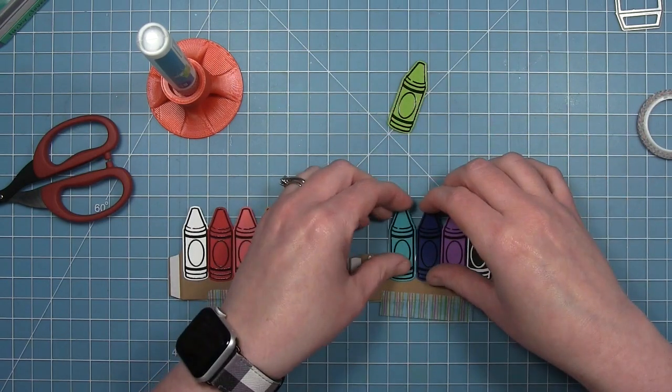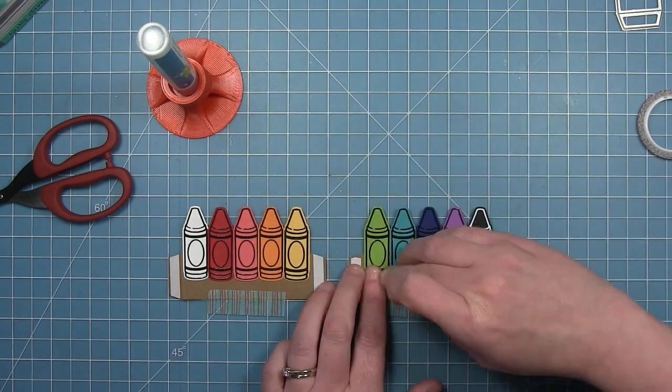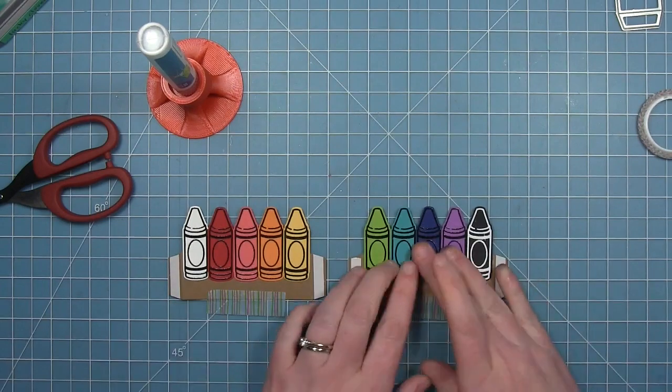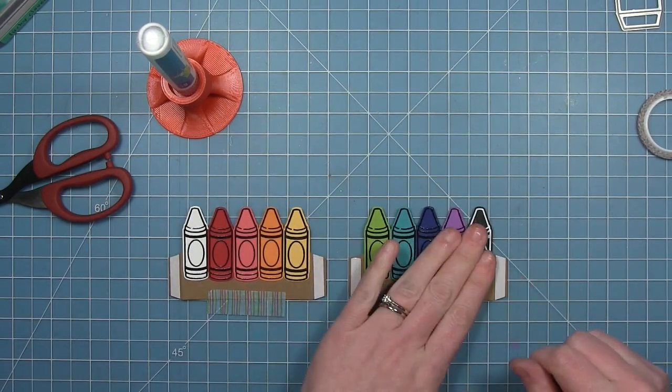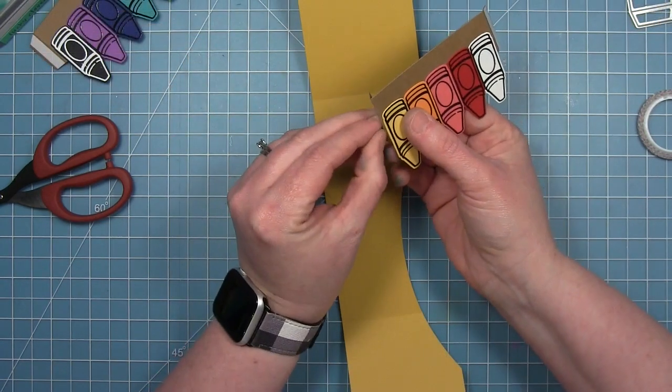So again I'm tucking these underneath the one that's in the middle so that they all fit within that piece that goes on the inside. You don't want it to overhang because obviously those tabs are going to fold back and they're going to go on the sides of the box. So you want it to line up right at the edge of those folds.